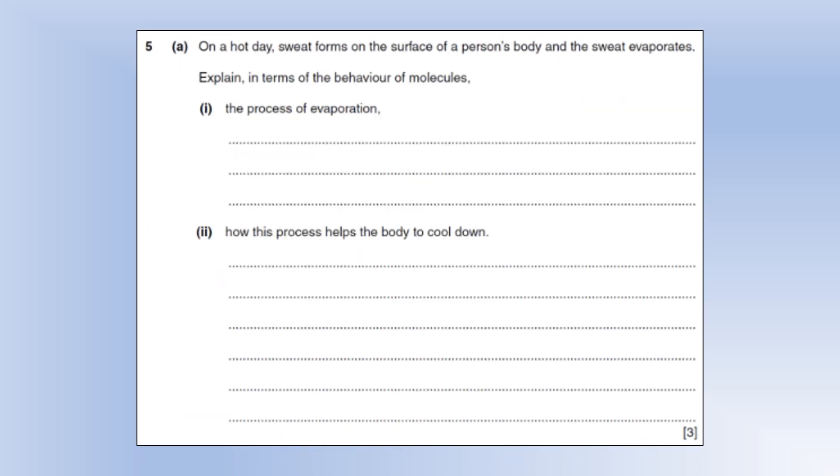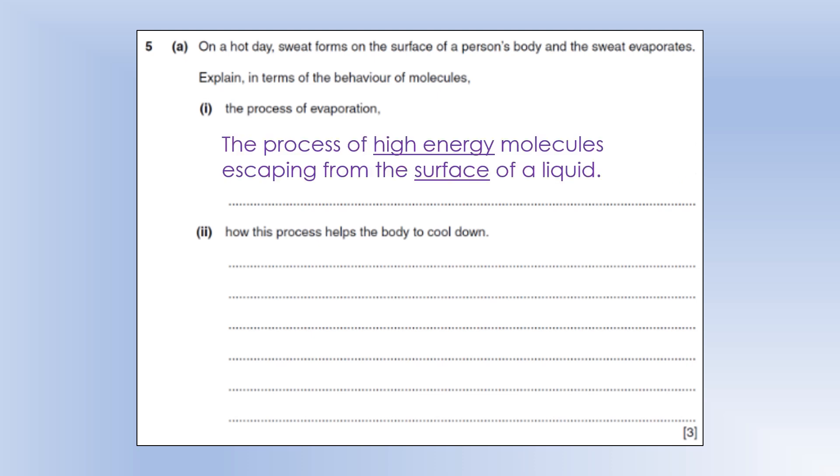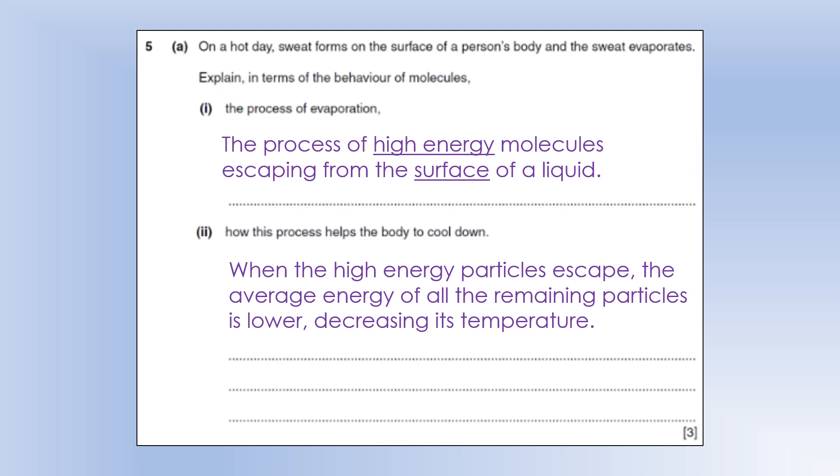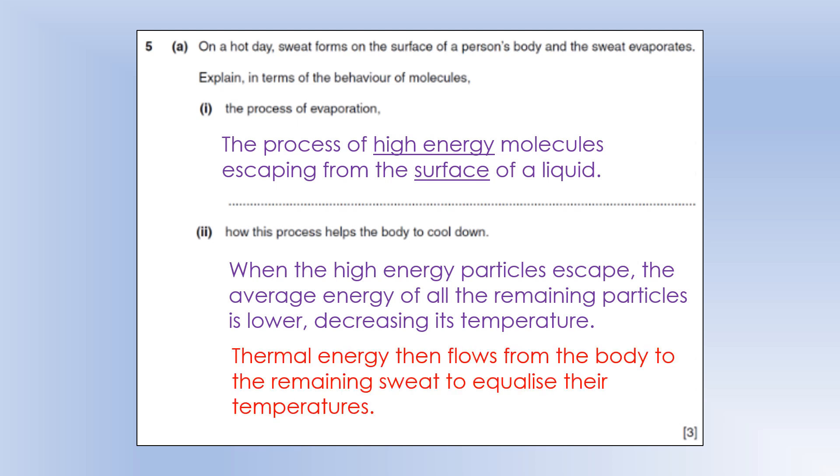So on a hot day, sweat forms on the surface of a person's body, and the sweat evaporates. Explain in terms of the behavior of molecules, the process of evaporation. So evaporation is the process of high energy molecules escaping from the surface of a liquid. And when that happens, if the high energy particles escape, that means the average energy of all the remaining particles is now lower. And what that means is if we would stick a thermometer in, we would measure a lower temperature, because temperature and average energy are essentially the same thing. And then that cooler liquid is now in contact with the skin. So thermal energy flows from the body to the liquid left on the skin, which is because it's now colder. And then that acts to equalize their temperatures. But overall, the temperature has dropped.